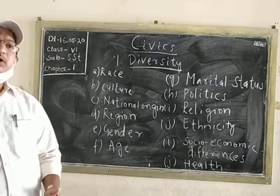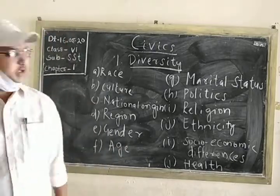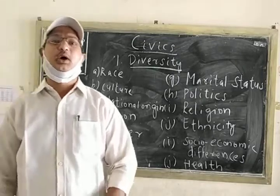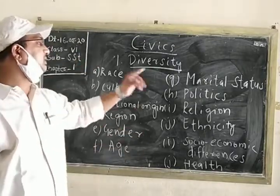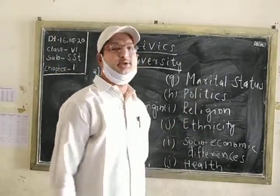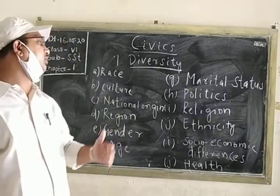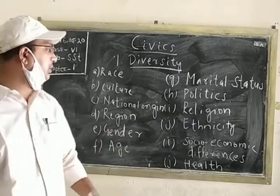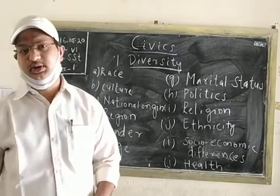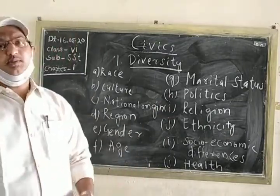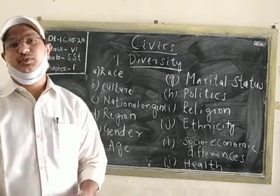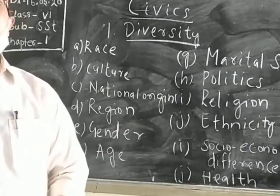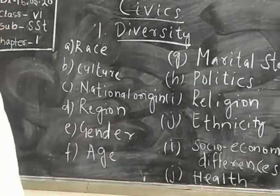Then, marital status — marital status means are you single, are you married, are you divorced, are you a widow? Then, politics — politics has also made us different from one area to another. The people who are in politics may not be the same as the common people. Then, religion — there are billions of people in our country. We have different religions to follow. The major religions are Hinduism, Islam, Christianity, Sikhism, Buddhism, and Jainism — all these different religions differ us in our religious practices.